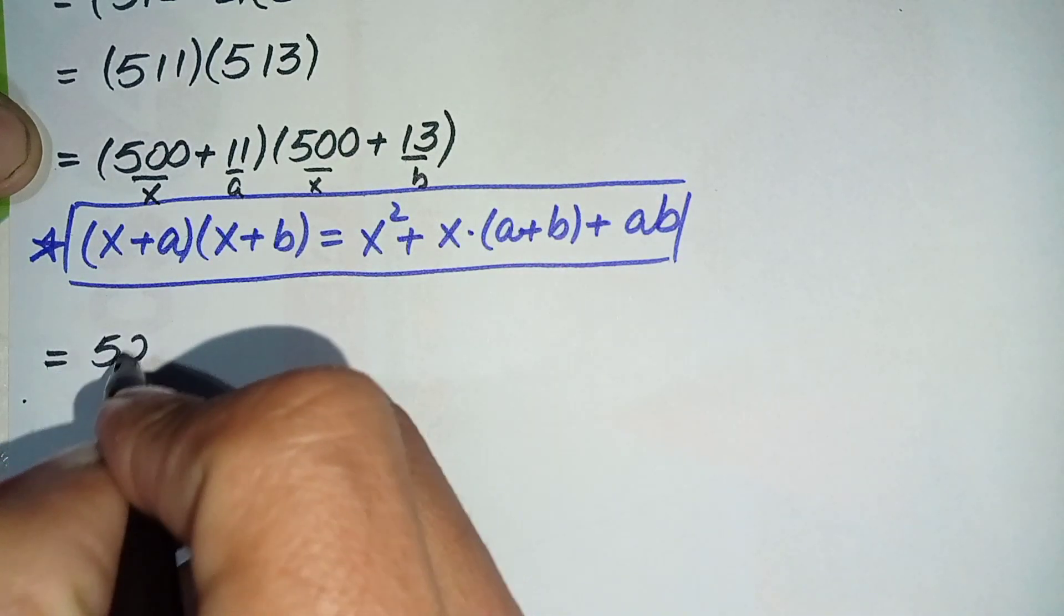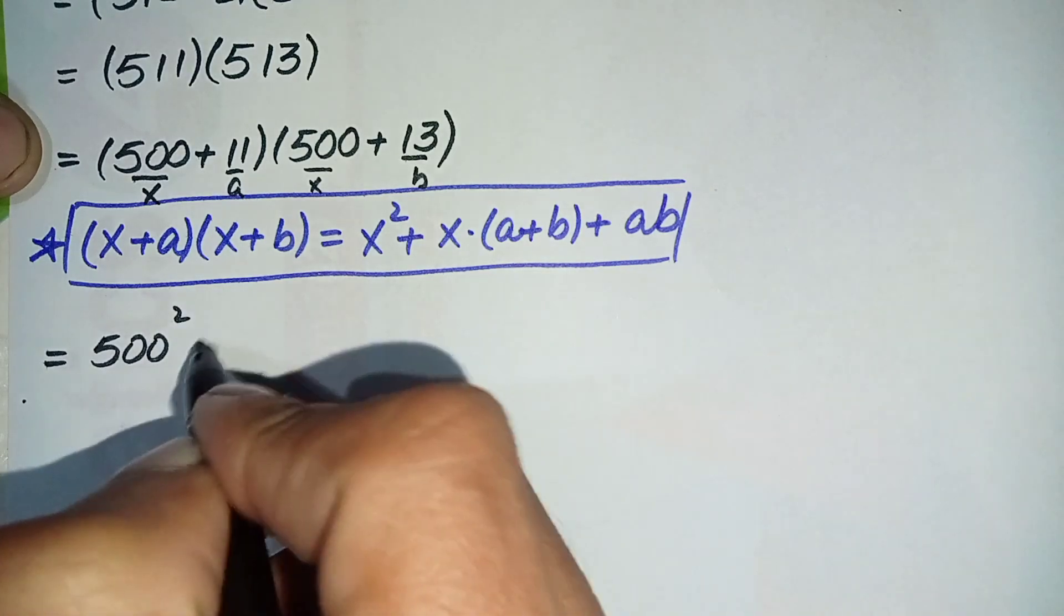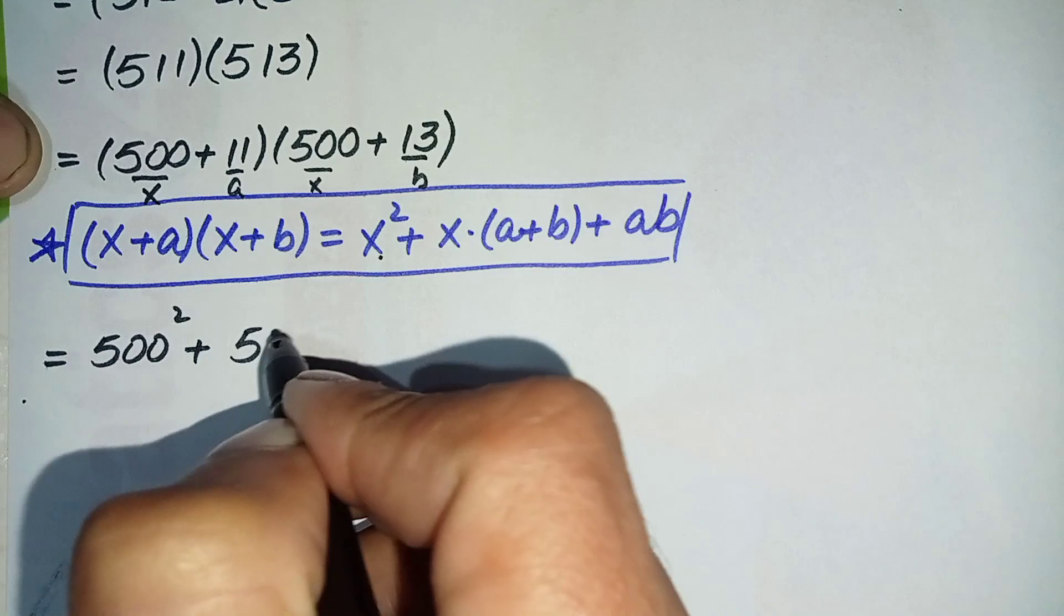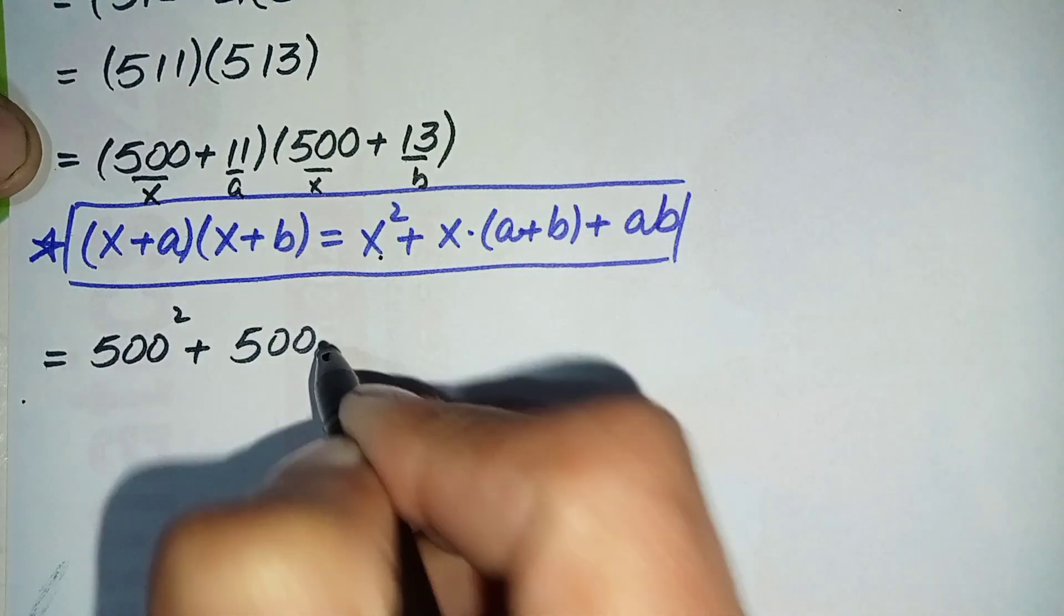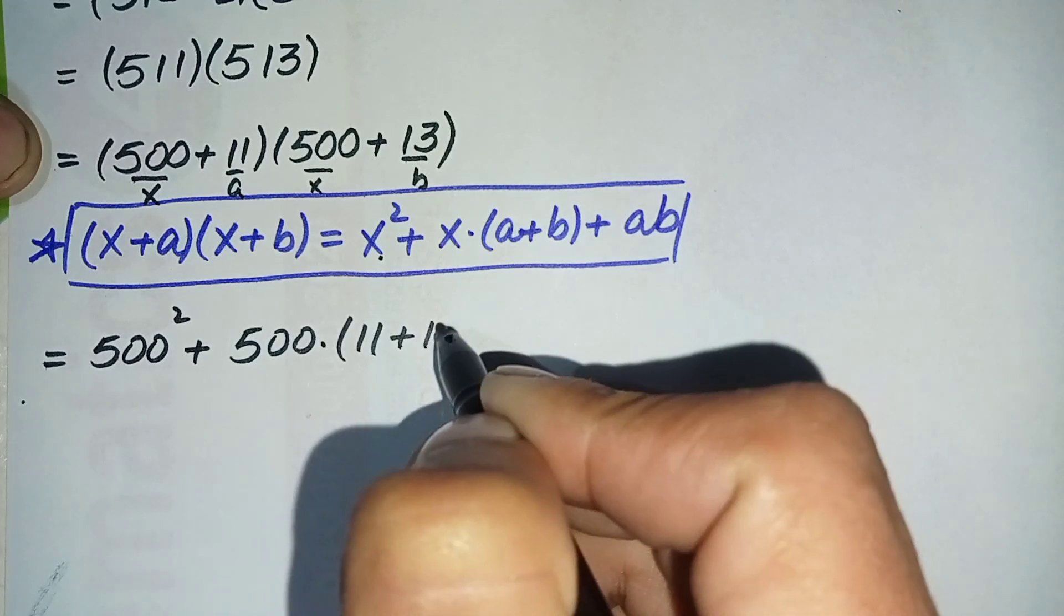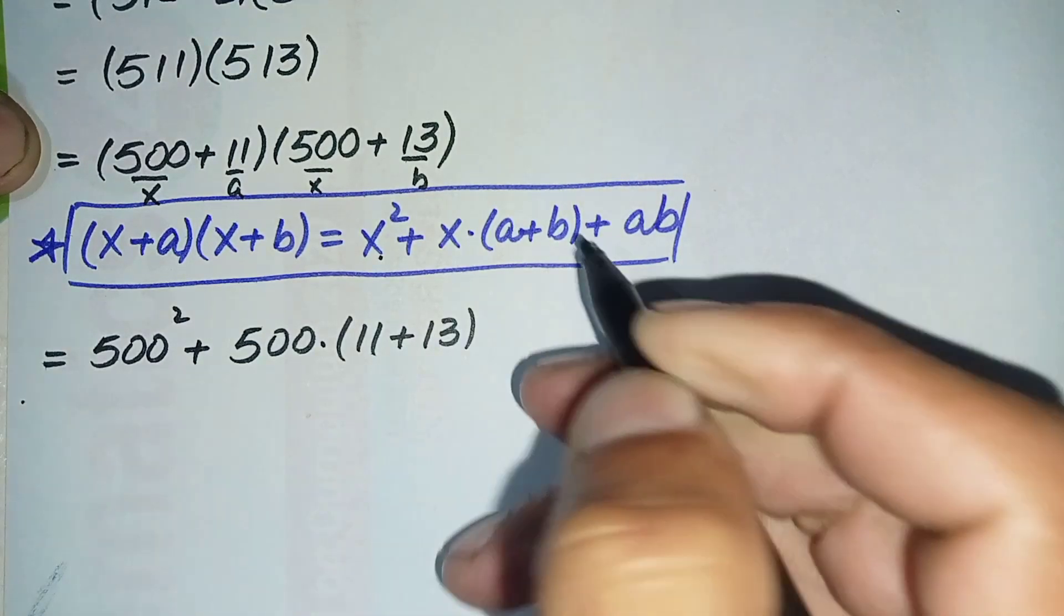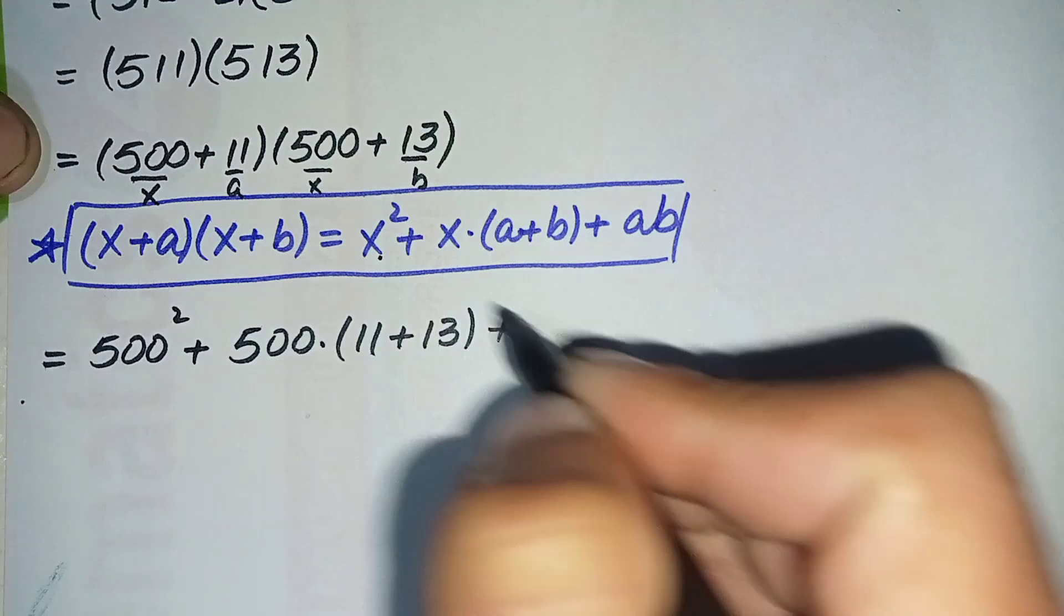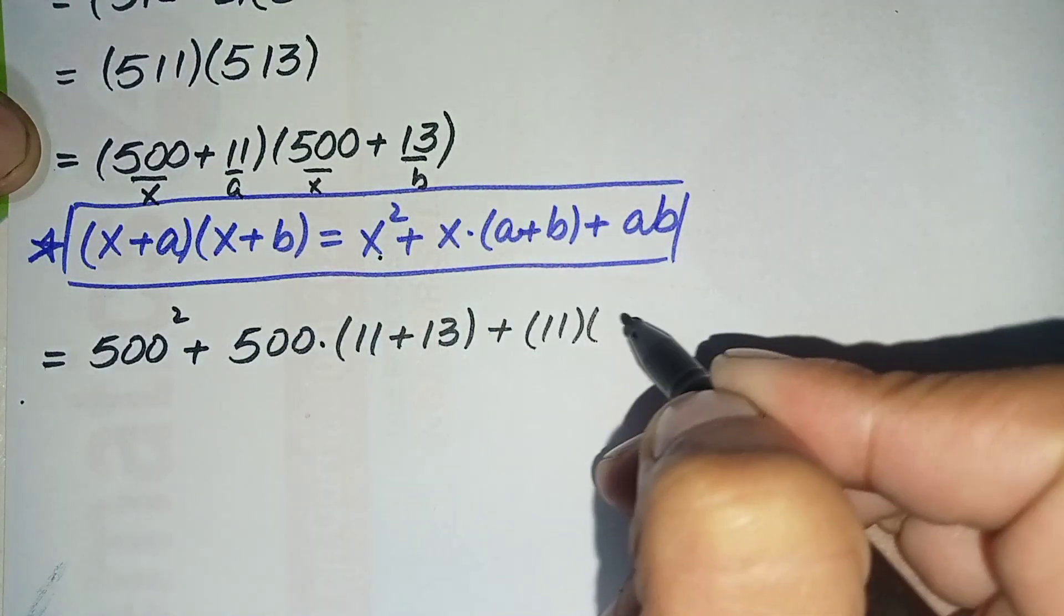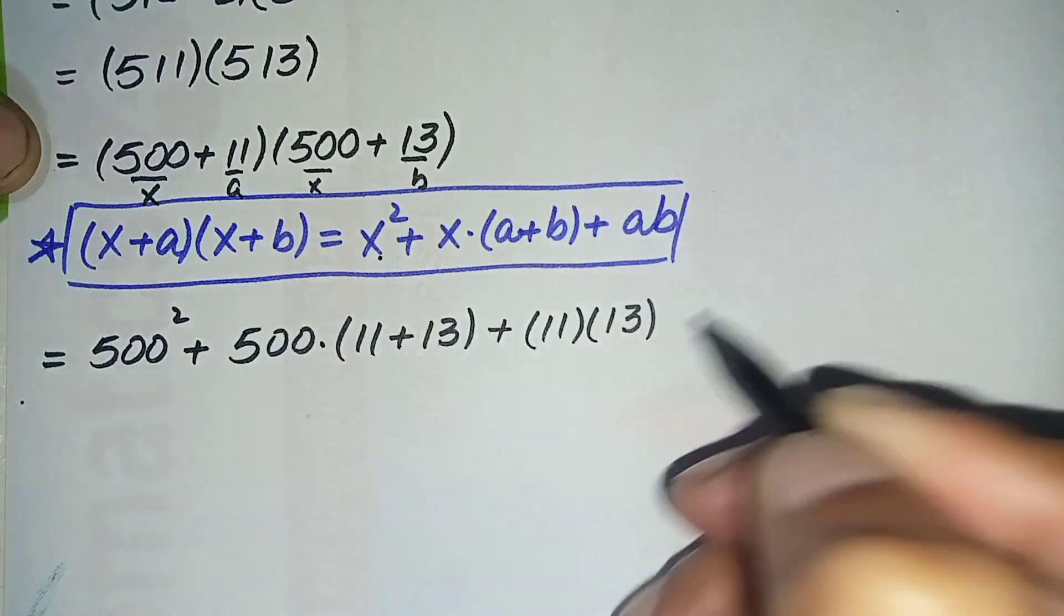a plus b, which is 11 plus 13, plus a times b. a is 11 and b is 13.